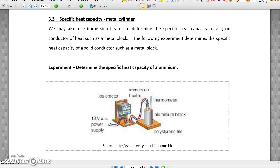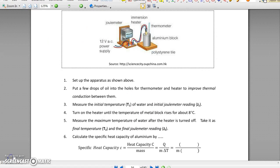Section 3.3. Specific heat capacity of a metal cylinder. Again, we will use an immersion heater to determine the specific capacity of a good conductor of heat, such as a metal block. The setup is similar to the last experiment, but this time we have a metal block. We put a few drops of oil into the holes for the thermometer and heater to improve thermal conduction between them, which means the heater can transfer heat to the metal block more effectively. You will have to measure the initial joule meter reading, initial temperature, and after heating, measure the final joule meter reading and final temperature, which is the maximum temperature after the heater is turned off. Then you may calculate the specific capacity of the metal.